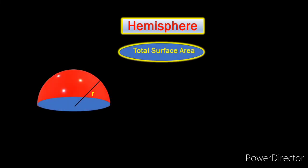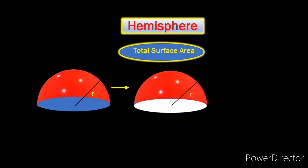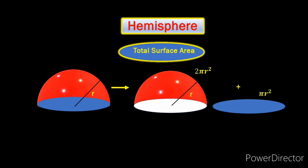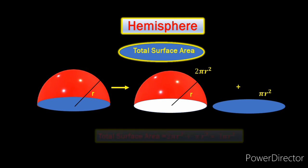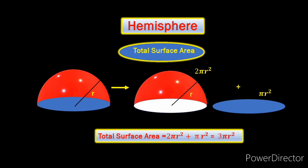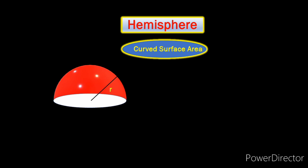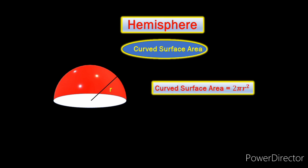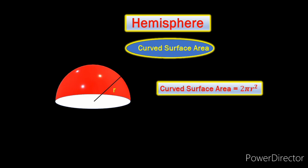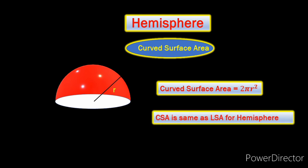Now let's conclude with the hemisphere. It is nothing but half of the sphere. So its total surface area will be the addition of the areas of this curved face and the flat circle. The area of this curved face will be half of the area of the sphere — that is 2πR². The area of the circle is πR², and that's why the total surface area of the hemisphere is 3πR². Now for the curved surface area of a hemisphere, we will only include the area of this curved face — the flat circle is excluded — and that's why the curved surface area is 2πR². Here also, the curved face is the same as the lateral face, and that's why the lateral surface area and the curved surface area of a hemisphere are one and the same.